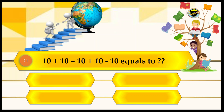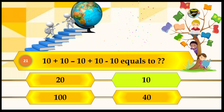This is a bit tricky — you need to write it down. 10 plus 10 minus 10 plus 10 minus 10 equals what? Your options are 20, 10, 100, and 40. The answer is 10. Let's see if 10 is the right answer. Great answer, well done!